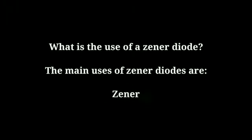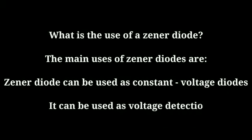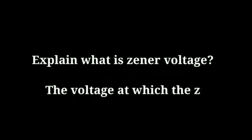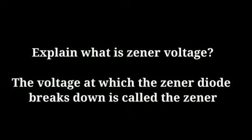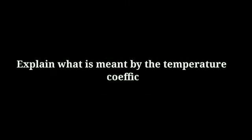What are the uses of a zener diode? Zener diodes can be used as constant voltage diodes, as voltage detection devices, and for voltage clipping. What is zener voltage? The voltage at which the zener diode breakdown occurs is called the zener voltage.